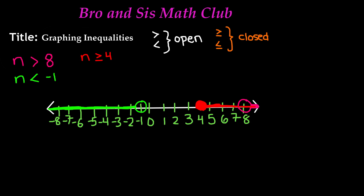So our last example: let's say we have n is less than or equal to the number 2. We know that less than or equal to is going to be a closed circle — so a closed, shaded-in circle on the number 2. Then you're going to shade to where the point is going, which in this case is to the left. Numbers are infinite so it will keep on going. So the value of n could be either 2 or anything less than the number 2.